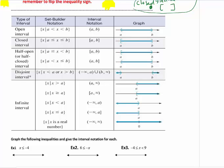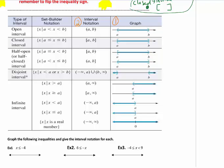Even if the problem doesn't ask you to graph, I suggest starting with the graph and then going to interval notation — because then you take your pencil and remember the wording: left to right. Take your pencil and drag it left to right across the graph. Start at the leftmost point. I start at the left side and follow it — where do I start touching it? I start touching it at A, that's my smallest value, and I continue touching it all the way to B, my largest value. Both are open, so I use parentheses.